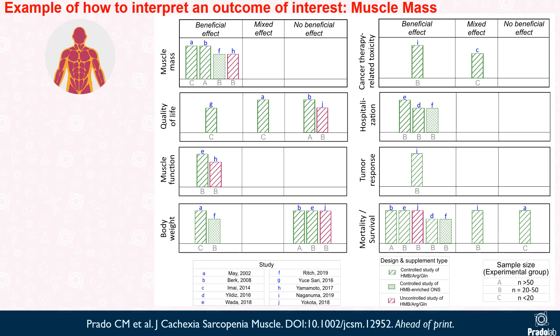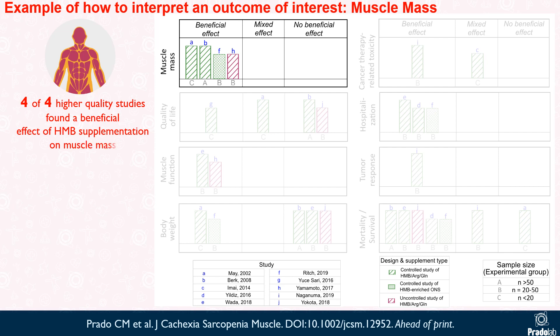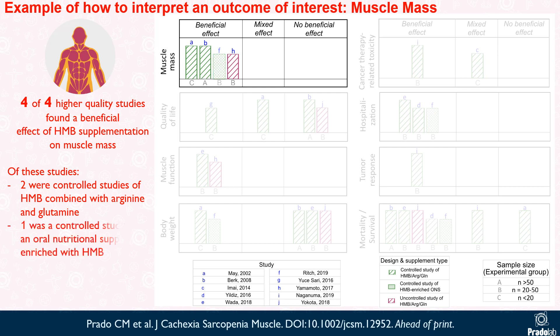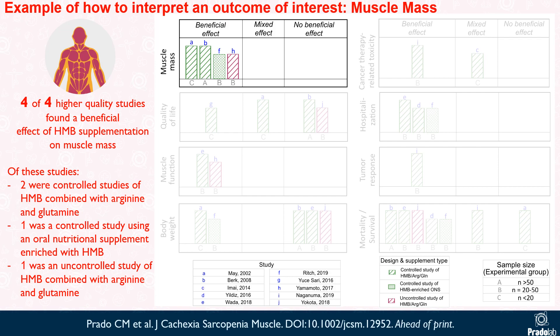Here we will use muscle mass as an example of how to interpret the harvest plot for an outcome of interest. Four of four higher quality studies found a beneficial effect of HMB supplementation on muscle mass. Of these studies, two were controlled studies of HMB combined with arginine and glutamine, one was a controlled study using an oral nutritional supplement enriched with HMB, and one was an uncontrolled study of HMB combined with arginine and glutamine.